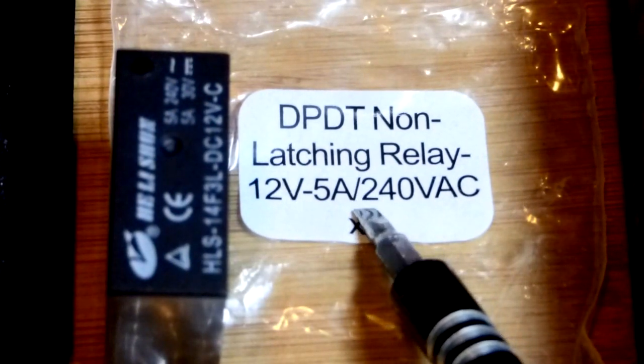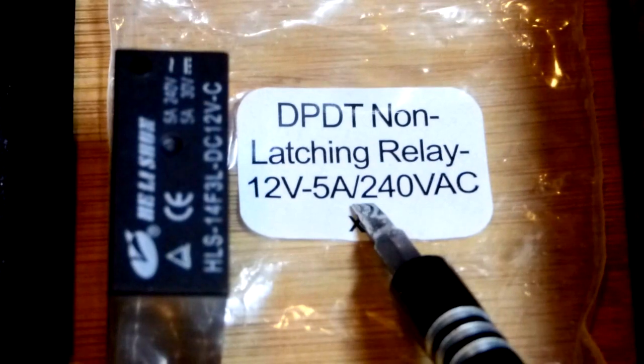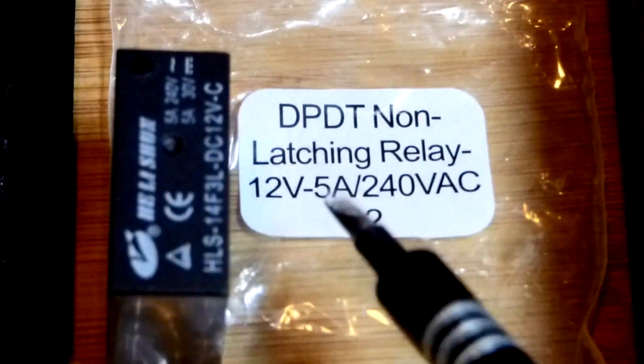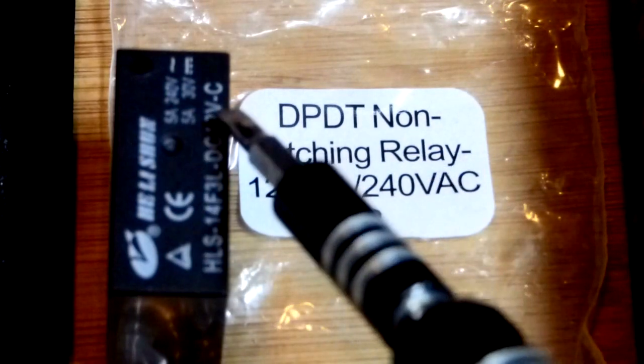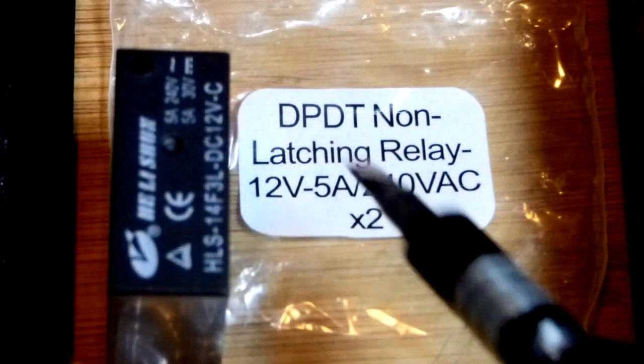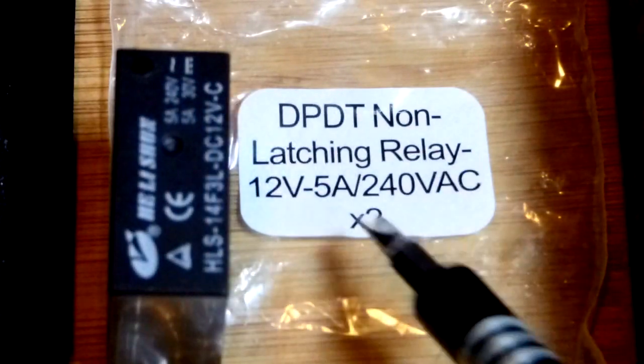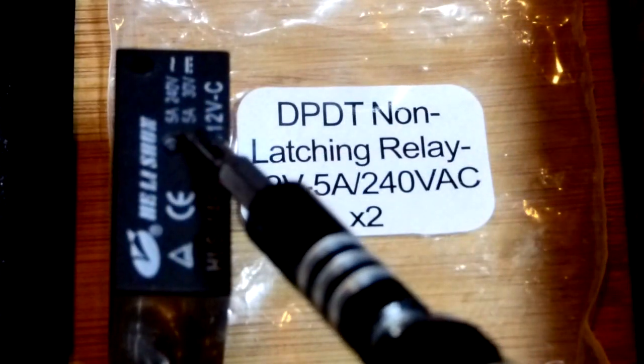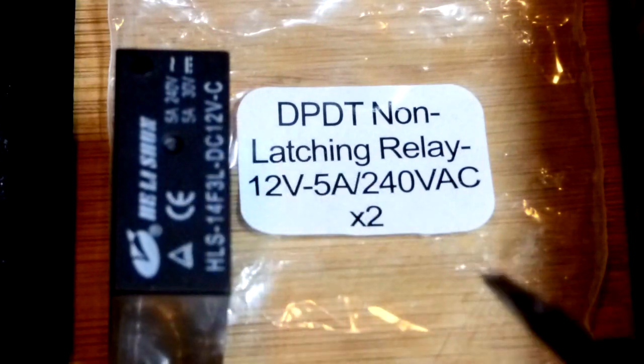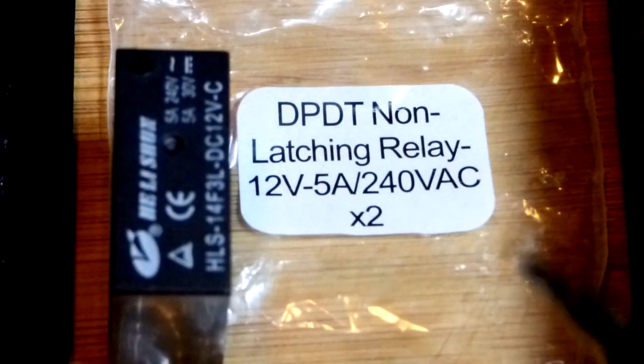So this other number is the load that it can handle. So this claims up to 240 volts alternating current. And over here it says 30 volts direct current. So you got to pay attention to that too. For both those numbers it says 5 amps. So those numbers are right there. I know it's hard to see, but in any case you can look for them right there.